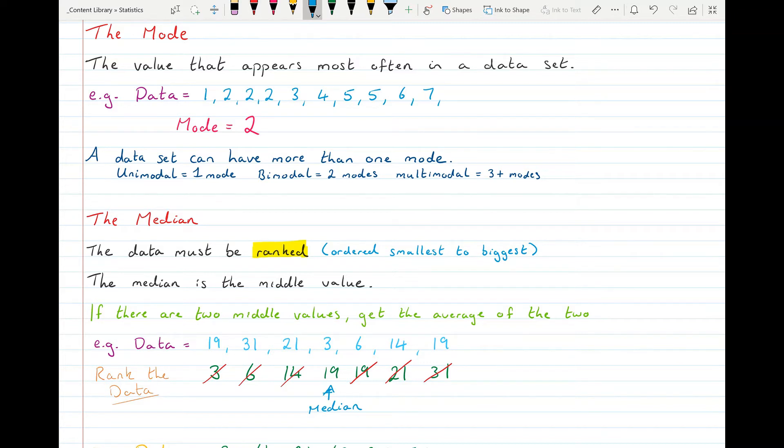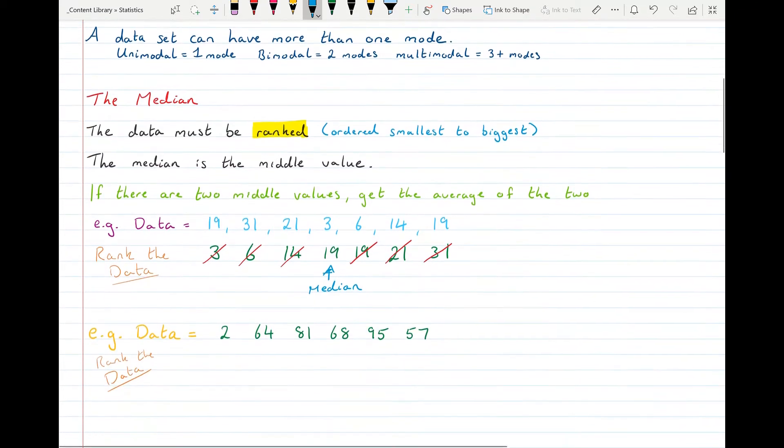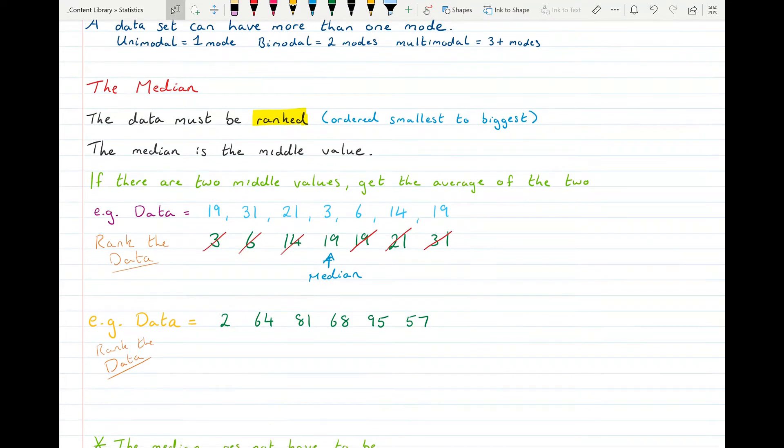And in that piece then, in like light green, that I said there was two middle values, you have to get the average of them. So let's have a look at how we do that. In this data set, it's 2, 64, 81, 68, 95, 57. Again, we have to rank the data before we can do anything with it. So it's going to start with 2, then 57, 64, 68, 81, and 95. So you want to be careful there that you have all of them included and that you have them in the right order.